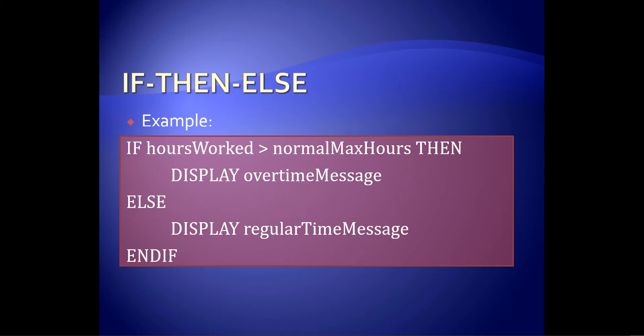If hours worked is greater than normal max hours, then do something. Well, we're going to display some message that says overtime message. Why? Because the number of hours worked is bigger than the maximum of hours they're supposed to work. So they've worked overtime. So we display an overtime message, whatever overtime message is. If not, well, then we just display the regular time message. You worked 40 hours this week or whatever it is your hours are. All right. Very simple program. You'll see the key words all capitalized. If, then, else, and if. You see how the dependent logic is indented inside. Very clear. Okay. So that's where we're going to start for this one. The next one we're going to get into multi-selection, which means more than two choices.